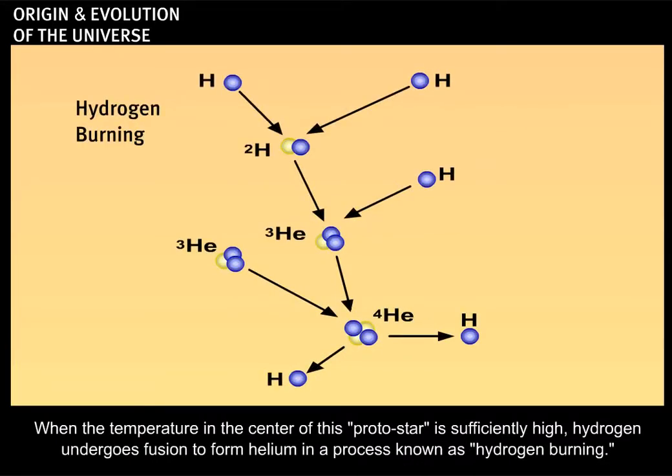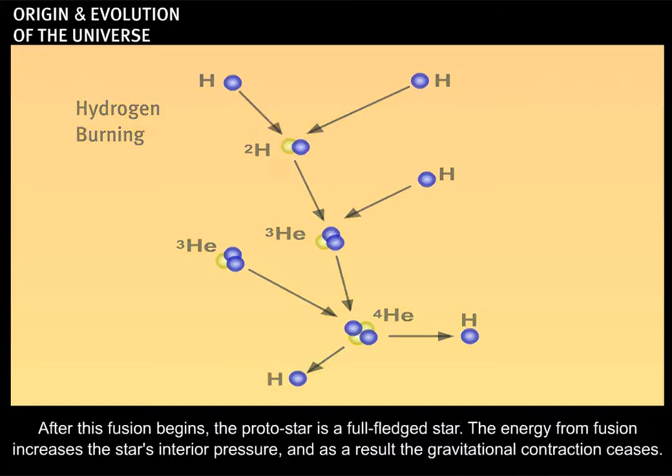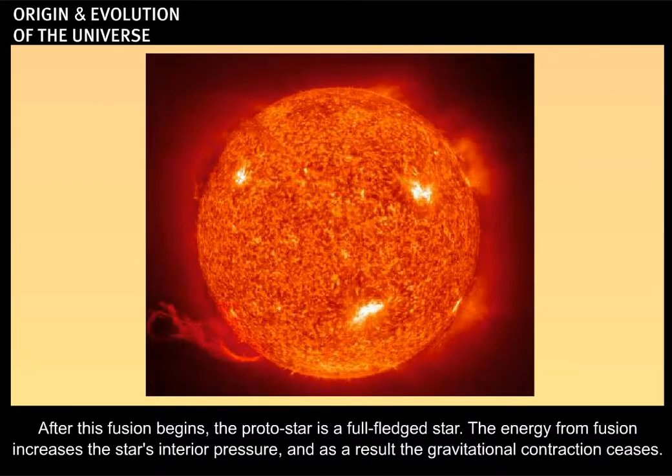When the temperature in the center of this protostar is sufficiently high, hydrogen undergoes fusion to form helium in a process known as hydrogen burning. After this fusion begins, the protostar is a full-fledged star.